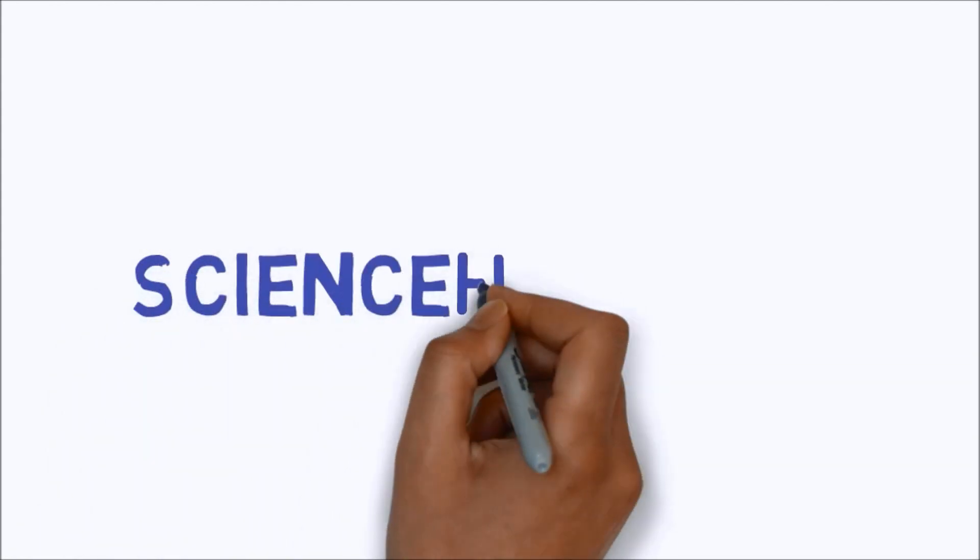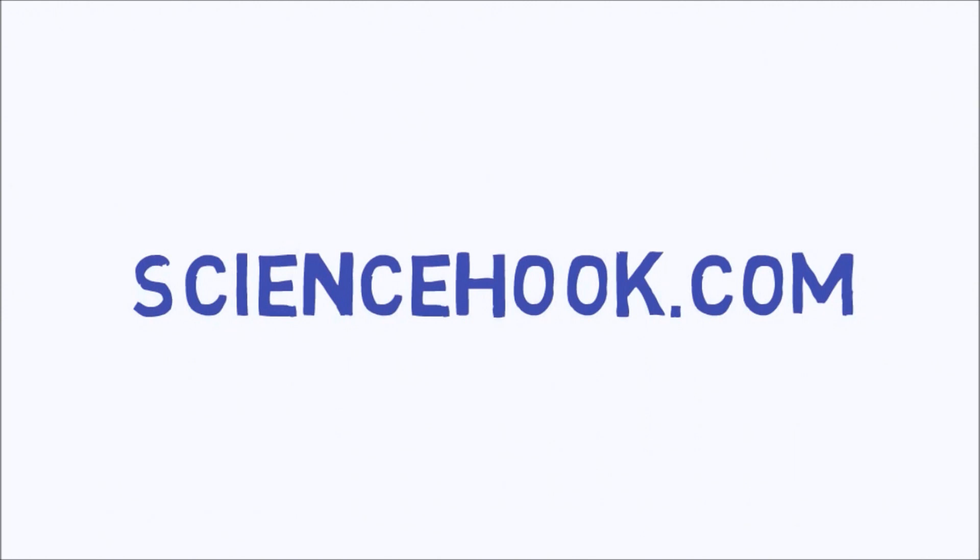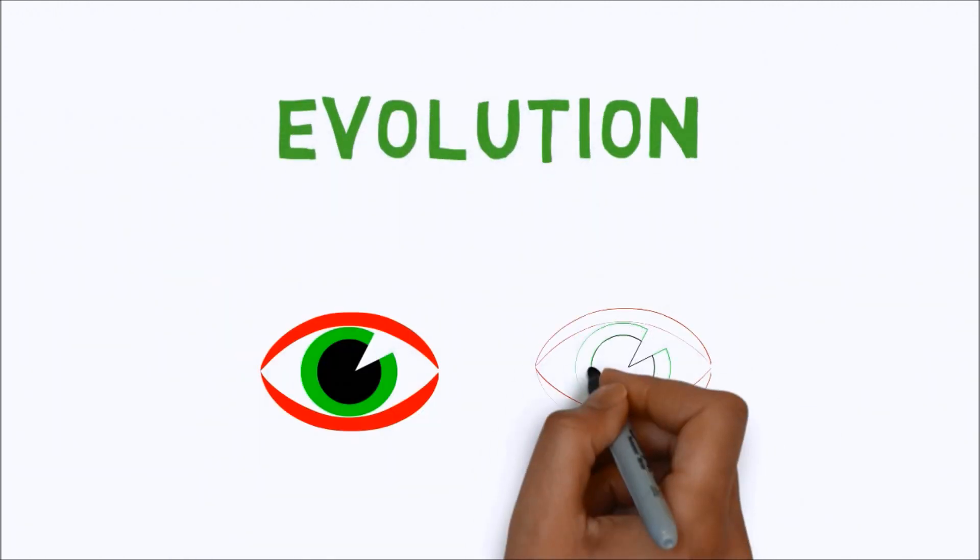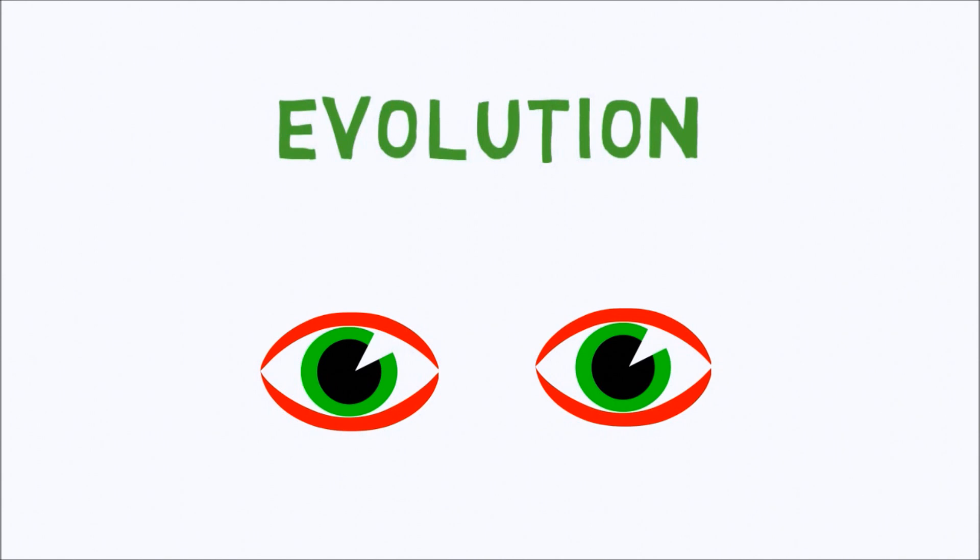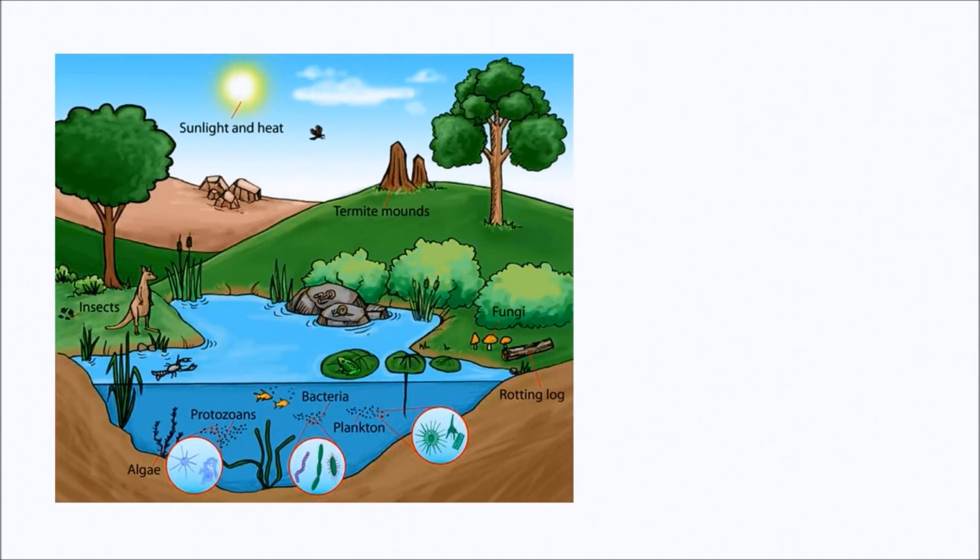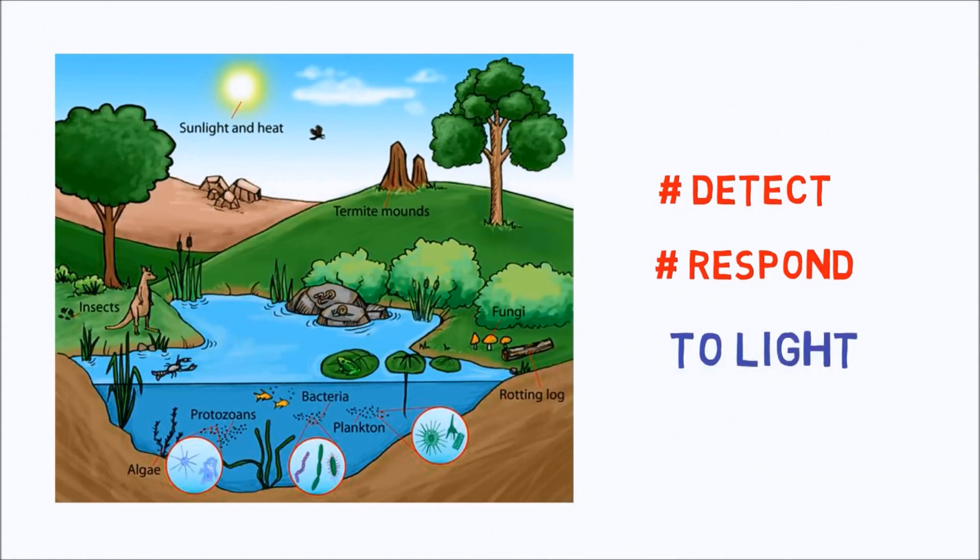Hello and welcome to our science web series brought to you by ScienceHook.com. Today we will understand the evolution of our eyes. The majority of life on our planet depends on the sun for energy, and because life is so tightly linked to the sun, many organisms have evolved the ability to detect and respond to light.